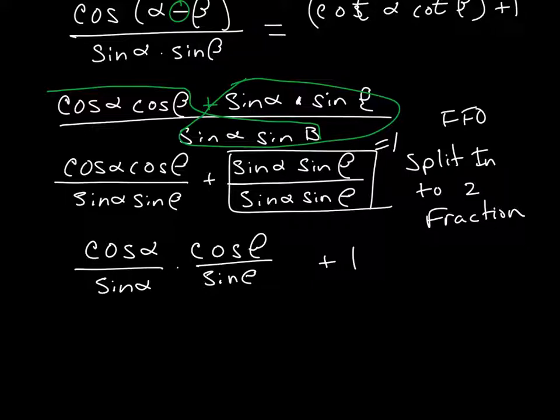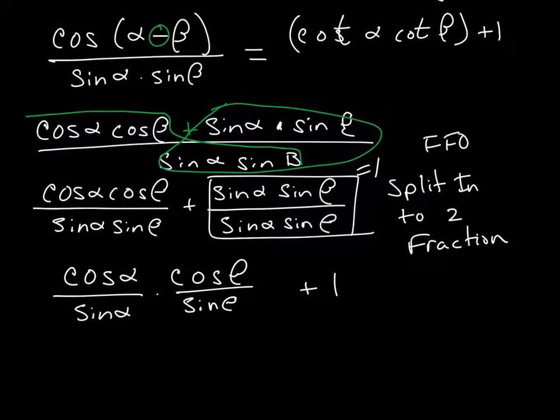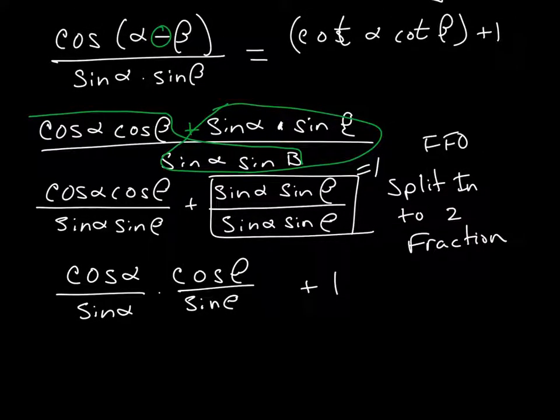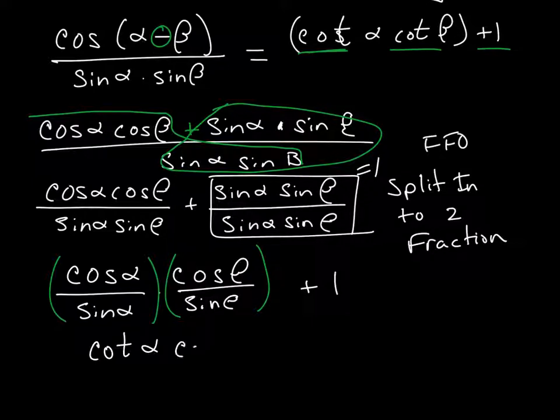Now, only because I know that what we're looking for, and it's a little bit at the top of the screen, but if we look back to our final answer, what are we trying to make it look like? We're trying to make it look like cotangent. Well, that's what I have, right? The cosine over the sine and the cosine over the sine are both cotangent. So, I've got what I need. I have the cotangent of alpha times the cotangent of beta plus 1.